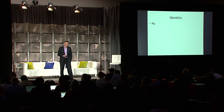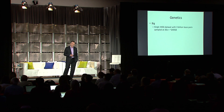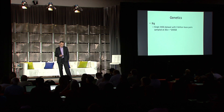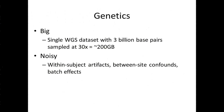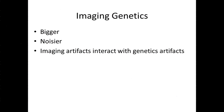Moving to genetics: a single whole genome sequence might, depending on the depth at which it's interrogated, range on the order of 200 gigabytes. And like imaging, genetics can also be quite noisy — similar within-subject artifacts, between-site confounds from different SNP chips or platforms used across different sites, and batch effects. So when you combine imaging and genetics, the data get bigger, yes, but they also get noisier in some complicated and interacting ways.